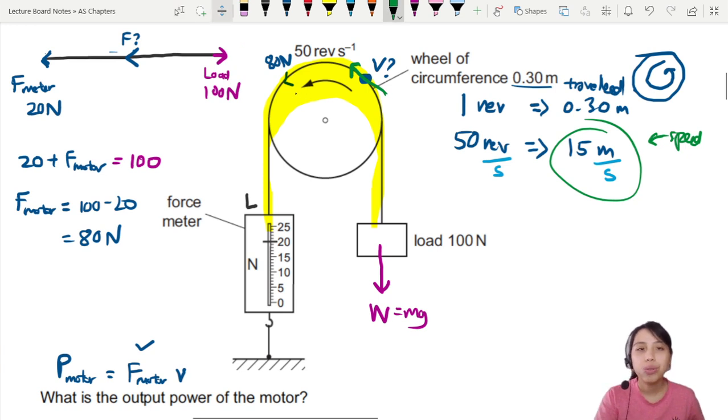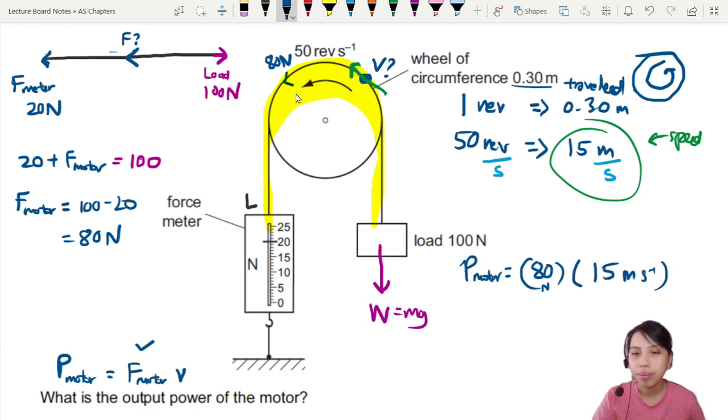Let's do the final calculation. The power of the motor—we know on average throughout the whole thing, it's exerting 80 newtons of force on the rope, and the rope is moving at a tangential speed of 15 meters per second.